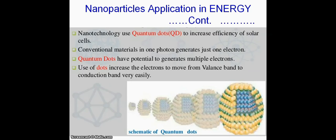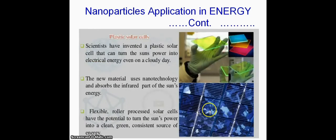Nanoparticle applications in energy: quantum dots are used to increase efficiency of solar cells. Conventional materials, one photon generates one electron. But quantum dots have potential to generate multiple electrons. Use of dots increases the electrons to move from valence band to conduction band very easily. This is a schematic diagram for quantum dots.